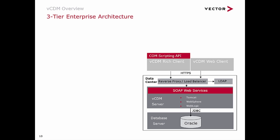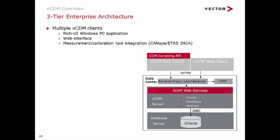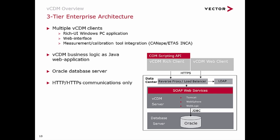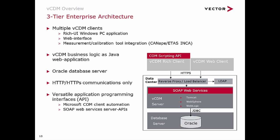VCDM is architected as a three-tier enterprise application and fulfills the requirements of modern data center regulations. VCDM offers many possibilities for client access: the full client, the web client, or directly with the calibration tool. The VCDM server is implemented as a Java web application and supports web application servers such as Tomcat, WebSphere, or WebLogic. An Oracle database stores all data — VCDM 5.6 supports Oracle version 12. All communications between layers are based on TCP/IP and offer secure communications via HTTPS. VCDM also provides a versatile API; client automation is supported via Microsoft COM, and web services APIs enable direct server interfaces.